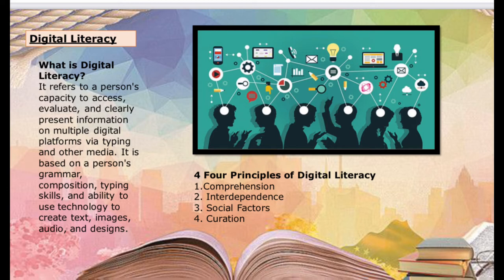There are four principles of digital literacy. The first is comprehension — we need to comprehend all the readings and information in social media so that we don't misinform other people. The second is interdependence — it is how media forms connect with one another, whether ideally or literally.